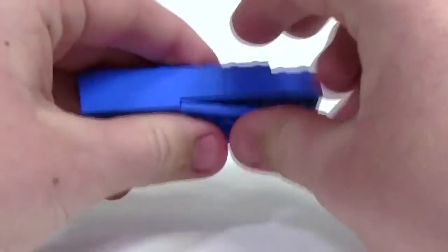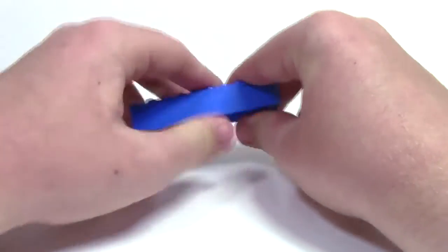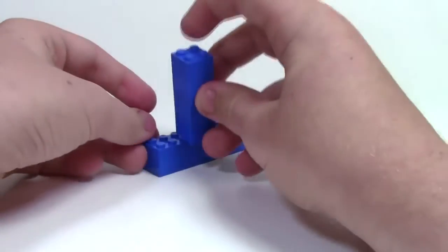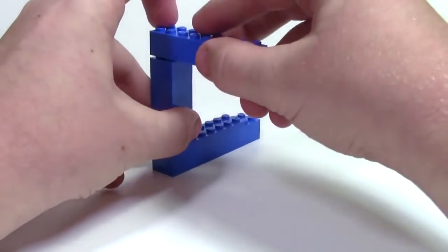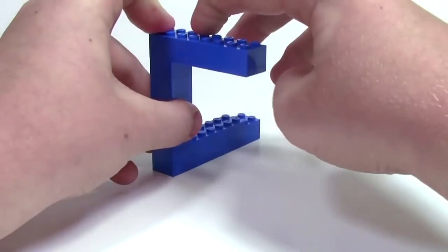As well as your 2x6, doesn't really matter what order, and set it there like that. You're going to need to get your 1x5 brick that you already made. Set it like that, as well as the 2x8 brick and plates you also made.